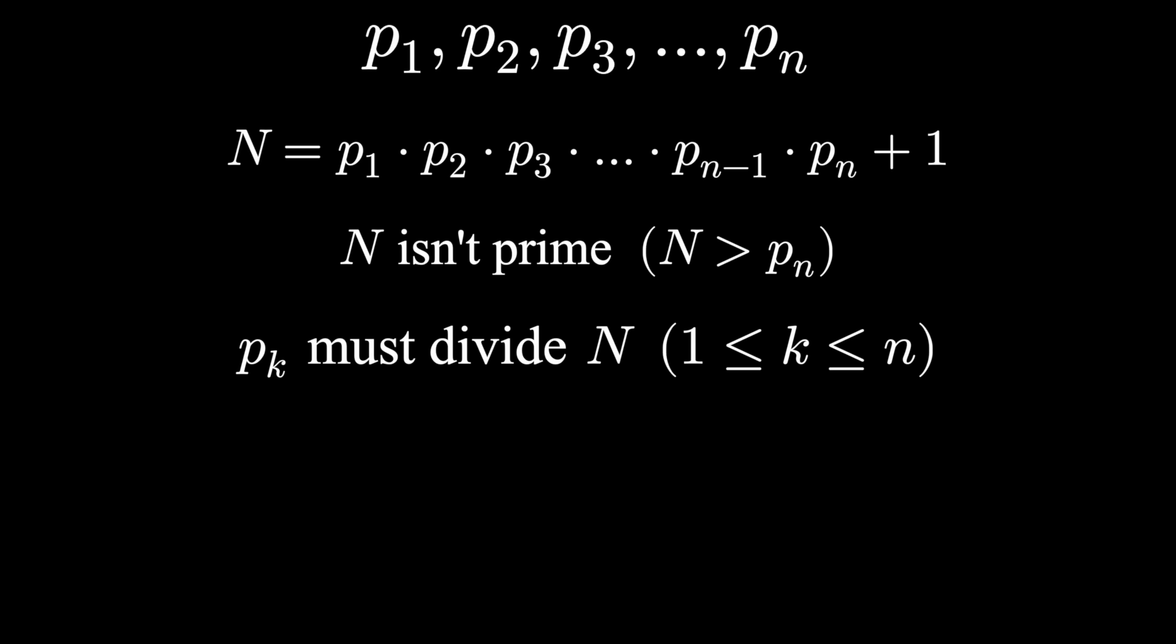Here's the part where we really have to think. One of our primes divides n. And, since one of those primes is in the list p1, p2, p3, and so on forever, it also divides the product p1, p2, p3, all the way up to pn. Since this prime divides n, and the product of all the primes, it divides their difference.